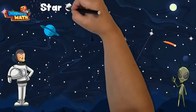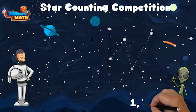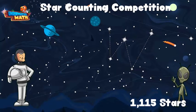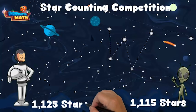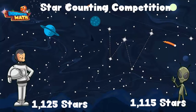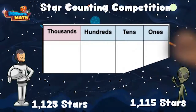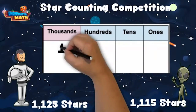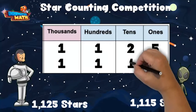Lenny and I are in a star counting competition. Lenny counted 1,115 stars and I counted 1,125 stars. We want to compare these two numbers to determine who is the winner. Sometimes it helps to use a place value chart to compare the two numbers. Let's write the two numbers on here.